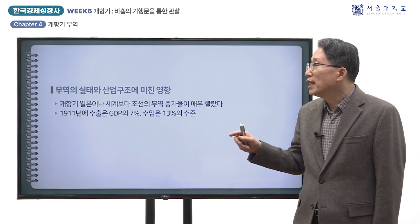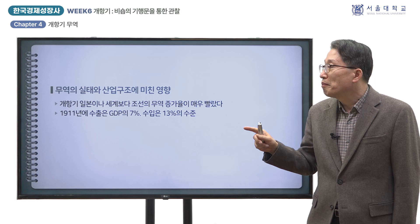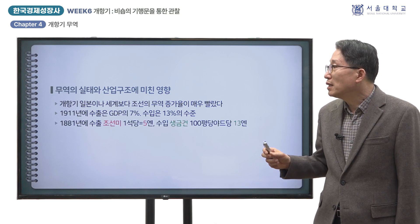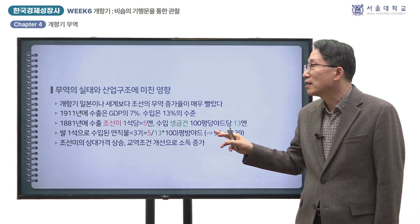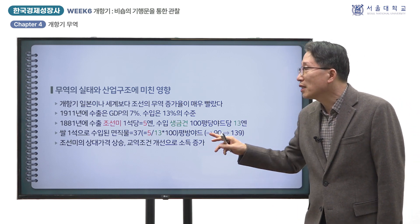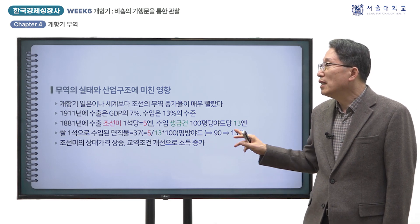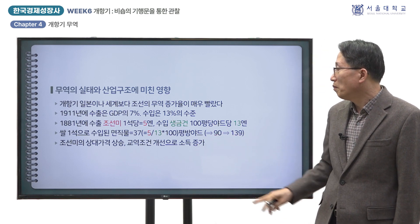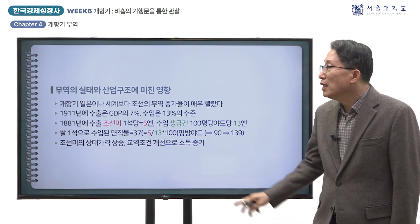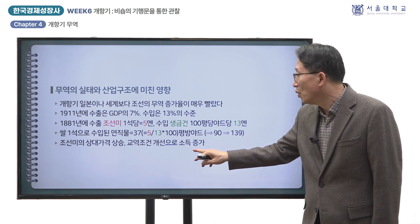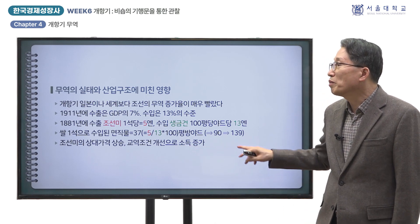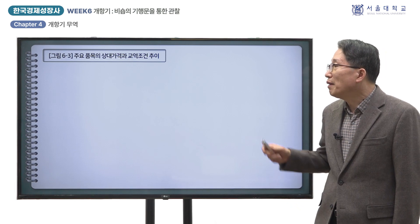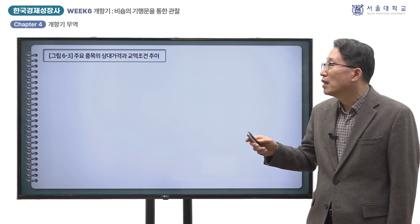그래프에는 조선의 1석당 수출 가격을 수입 생금건 100평방야드당 가격으로 나눈 비율을 제시했습니다. 1881년에 조선미 1석당 수출 가격은 5엔이었고 수입 생금건 100평방야드당 가격은 13엔이었으므로, 조선미 1석 수출로 생금건을 37평방야드 수입할 수 있었습니다. 이 비율이 1990년대에는 90평방야드로 높아졌고, 1930년대에는 139평방야드를 수입할 수 있게 되었습니다. 즉 쌀에 비해 면직물의 상대 가격이 그만큼 저렴했음을 말합니다.